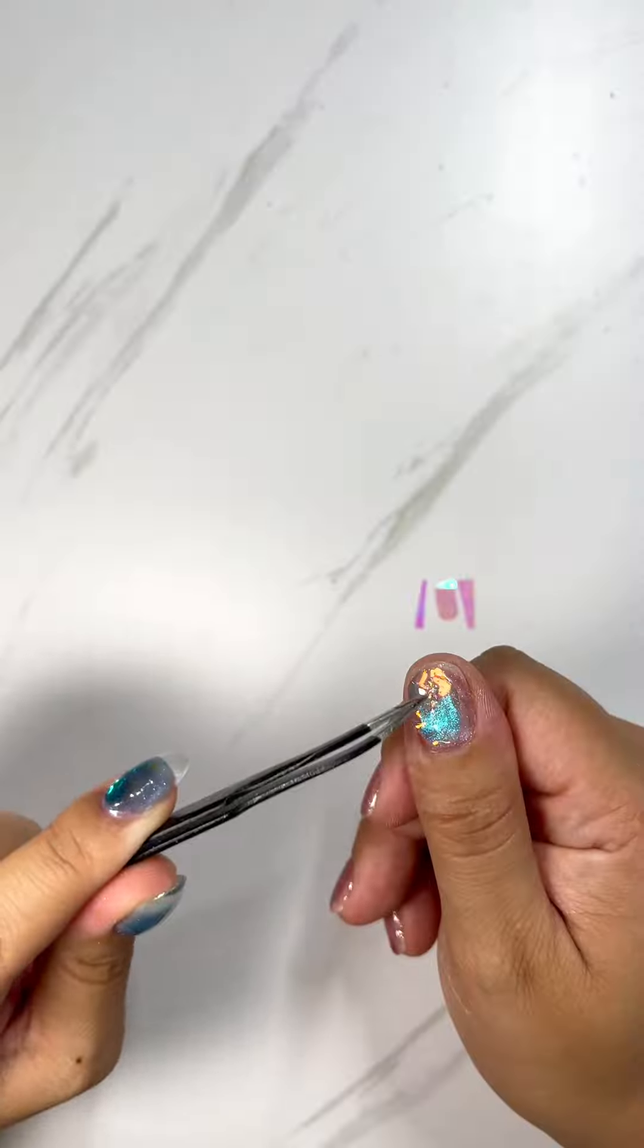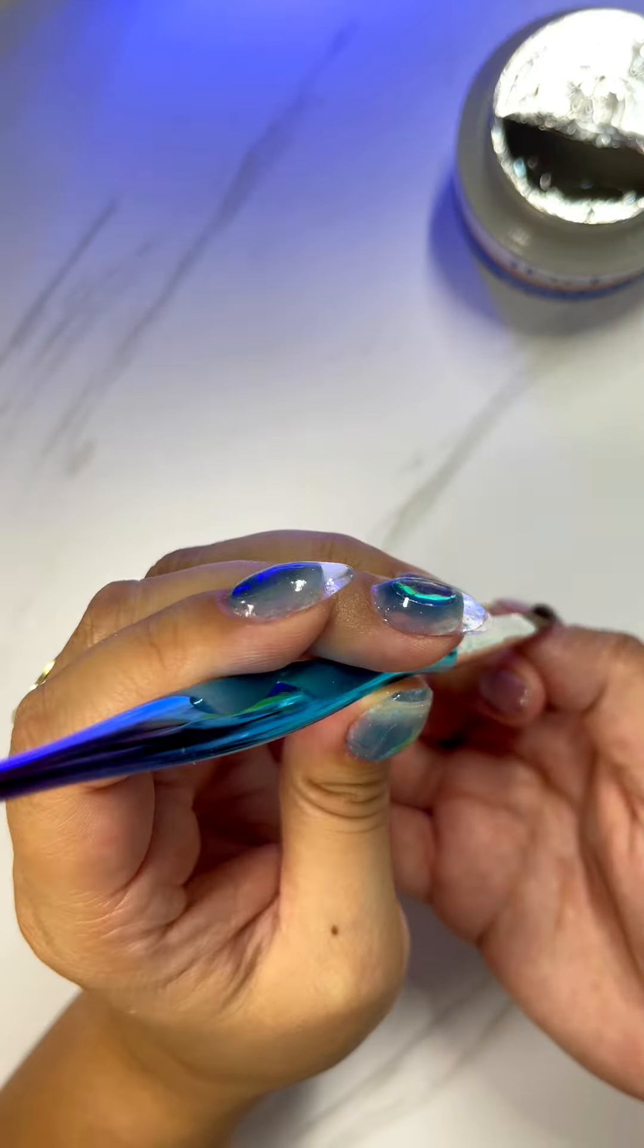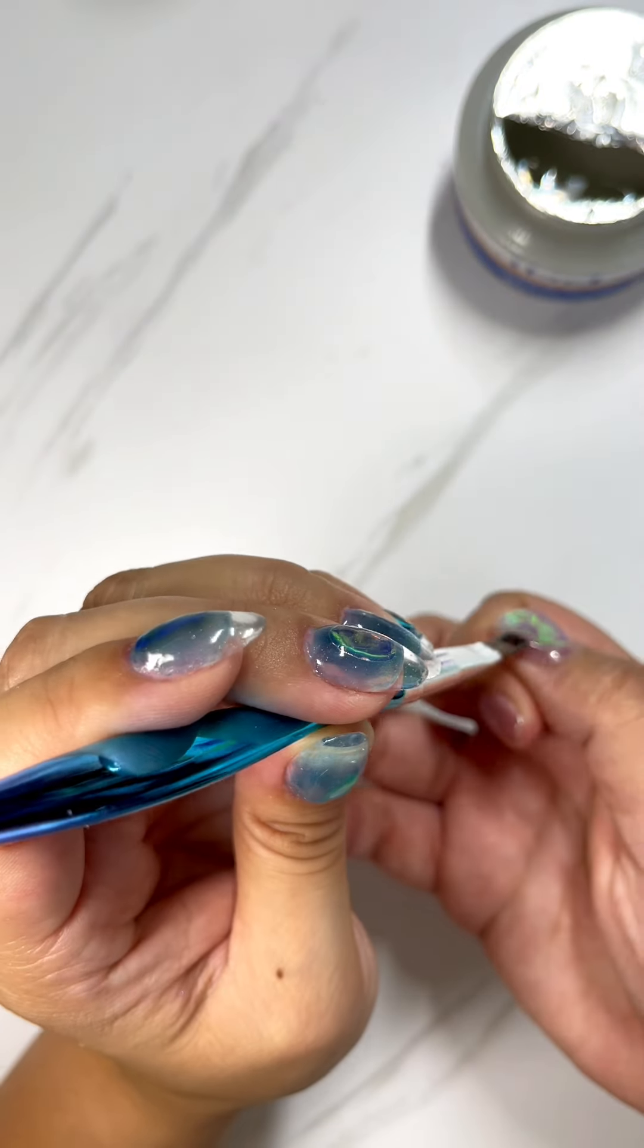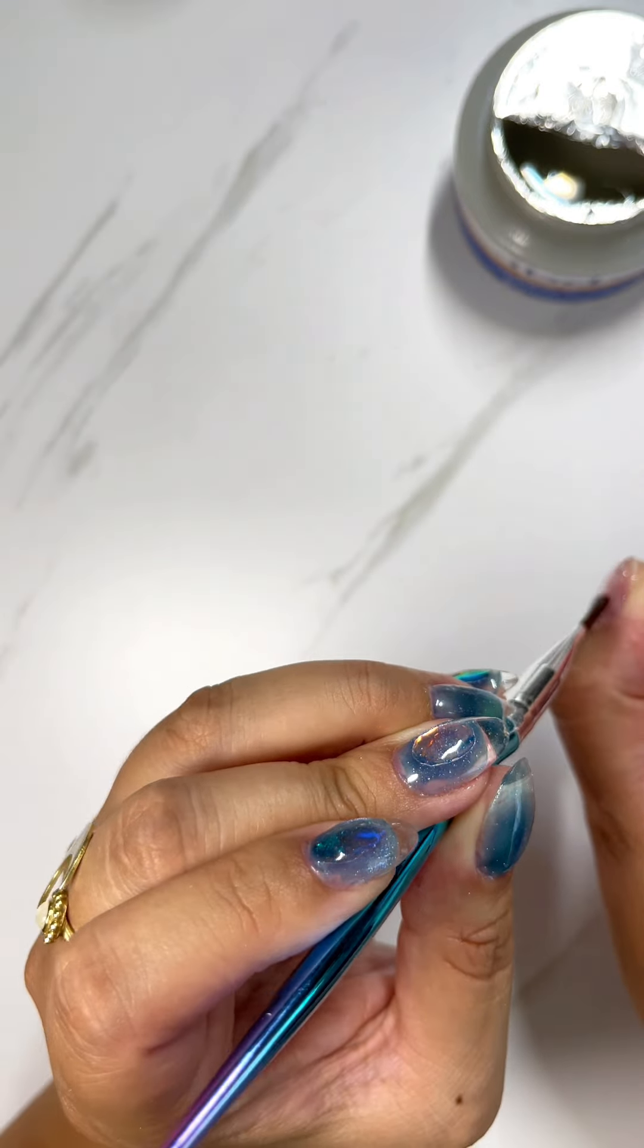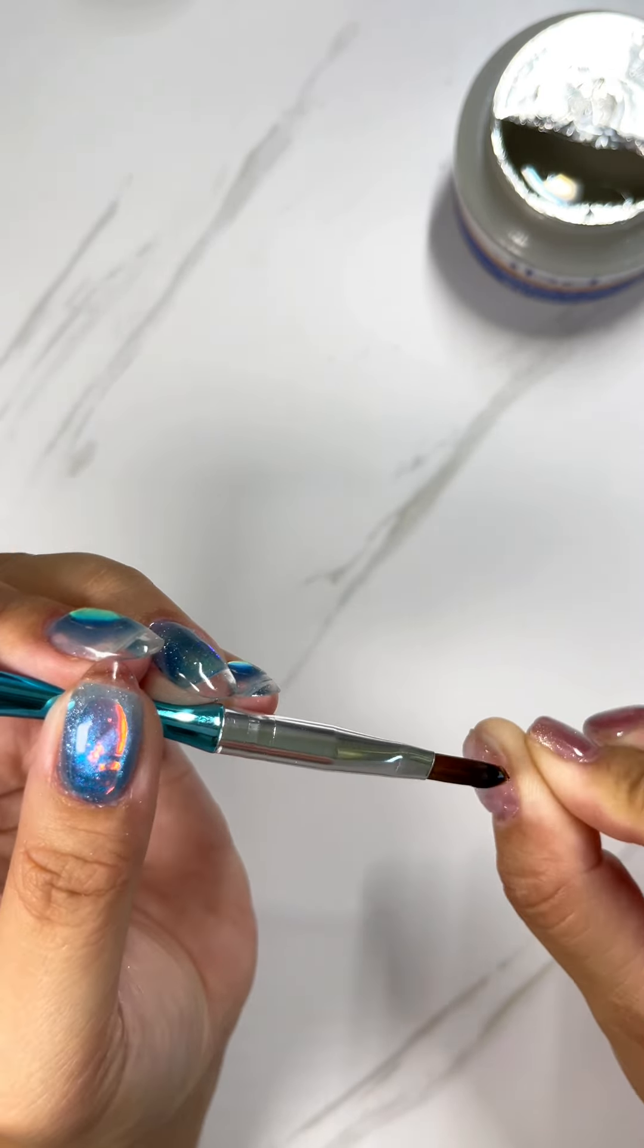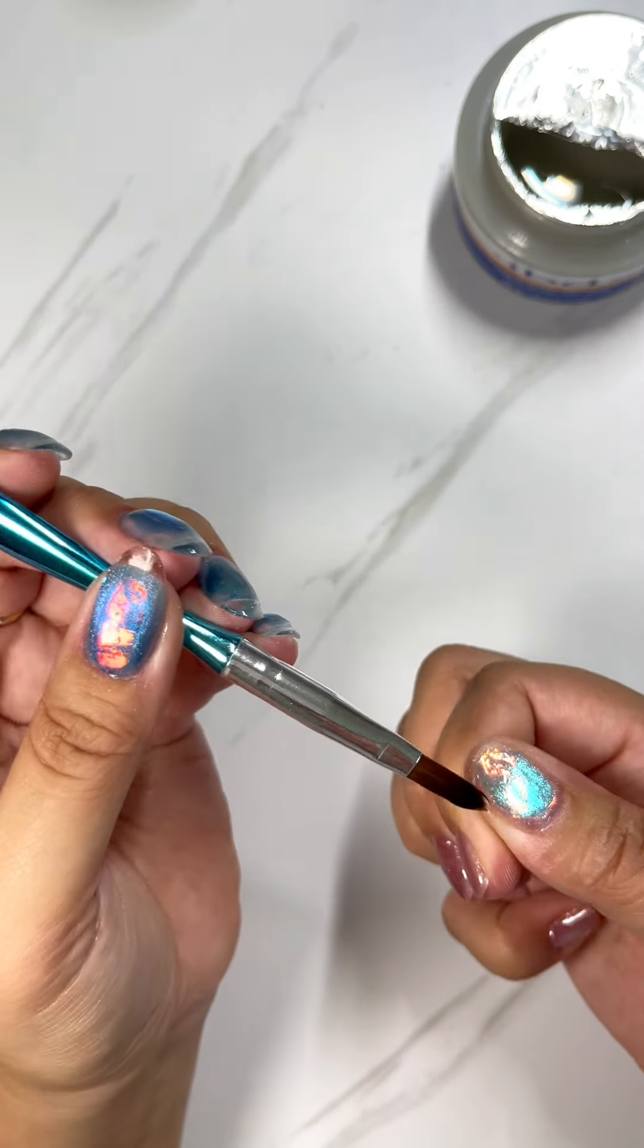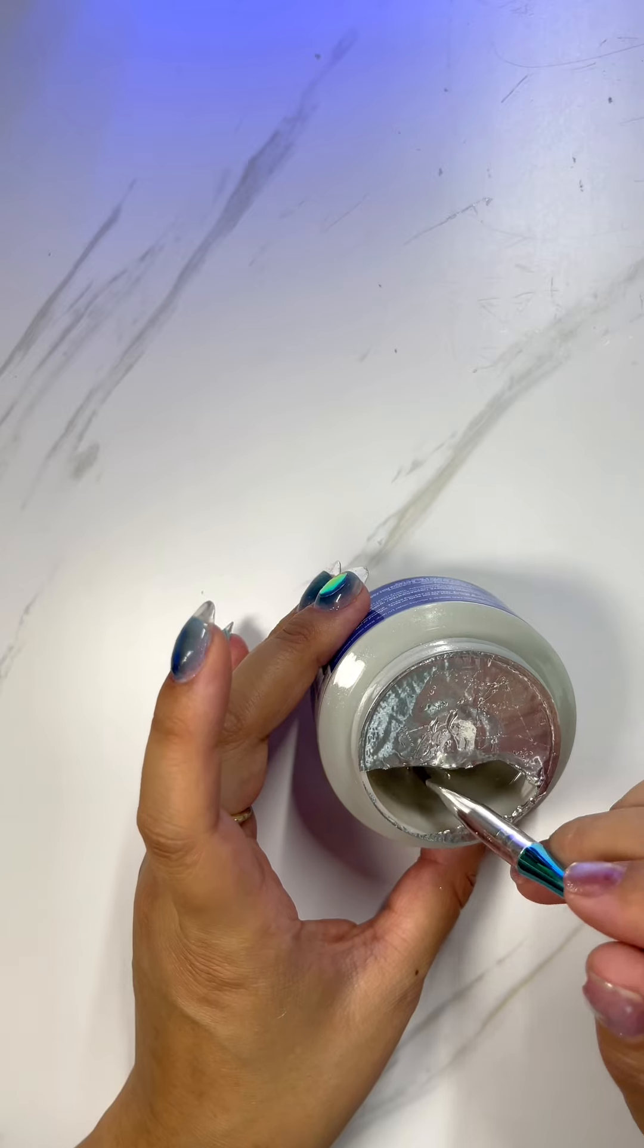I then used my IBD builder gel. I placed the builder gel on my nail and then placed the film on top and then I cured it. And now what I'm doing here is filling in around the edges of the film that was sticking out and also creating a dome over the top of the film.